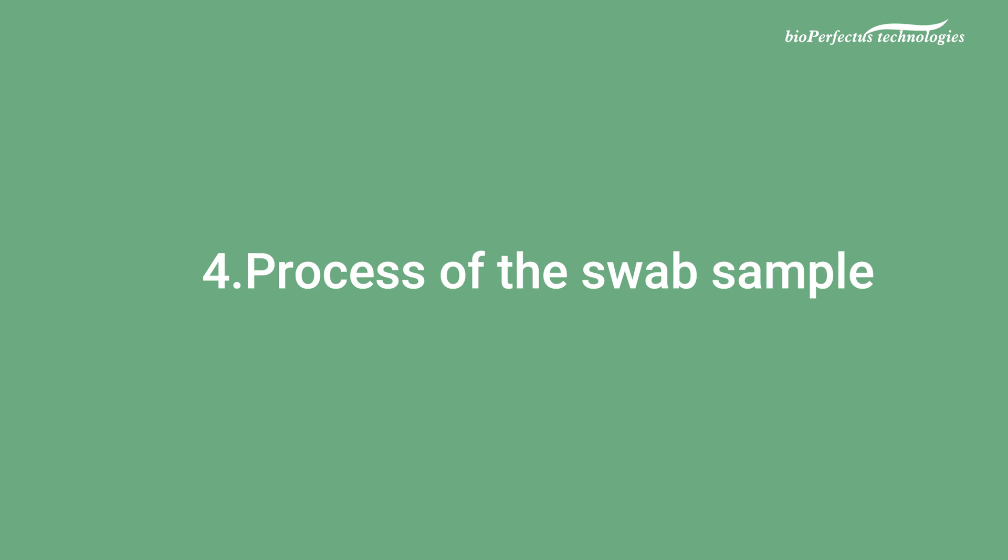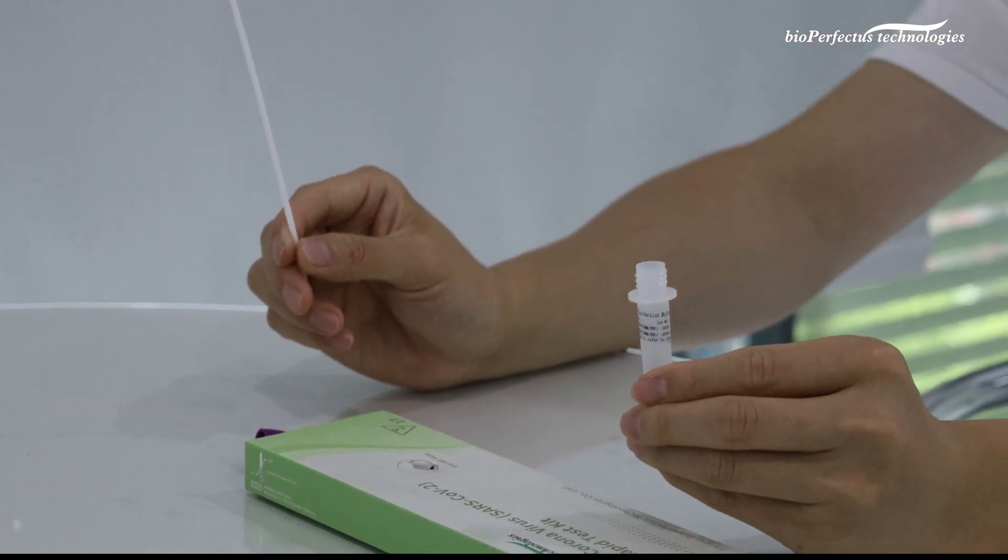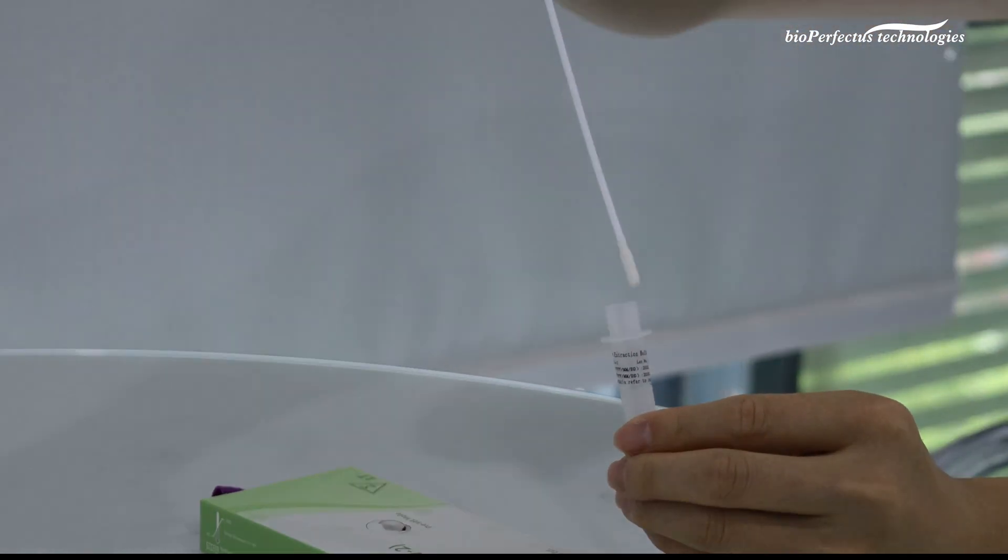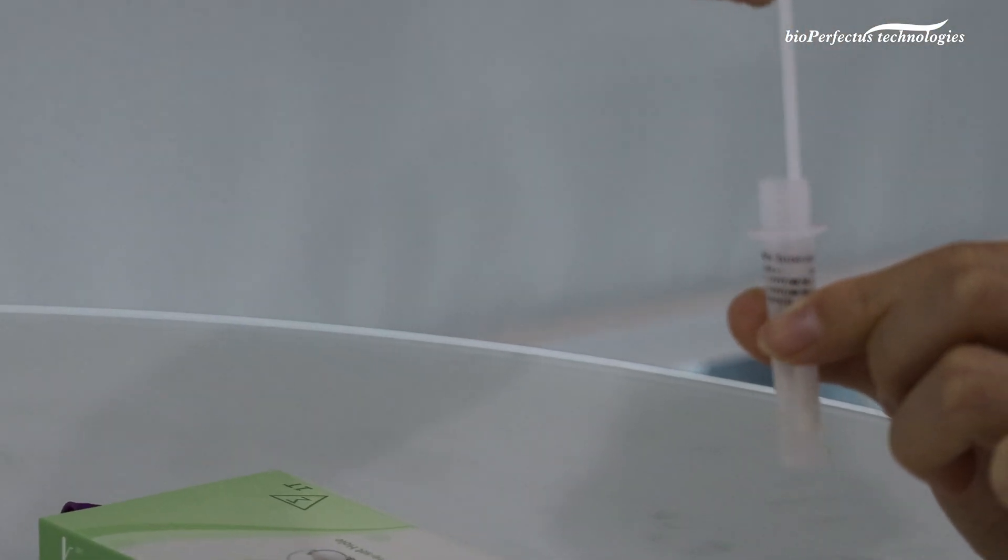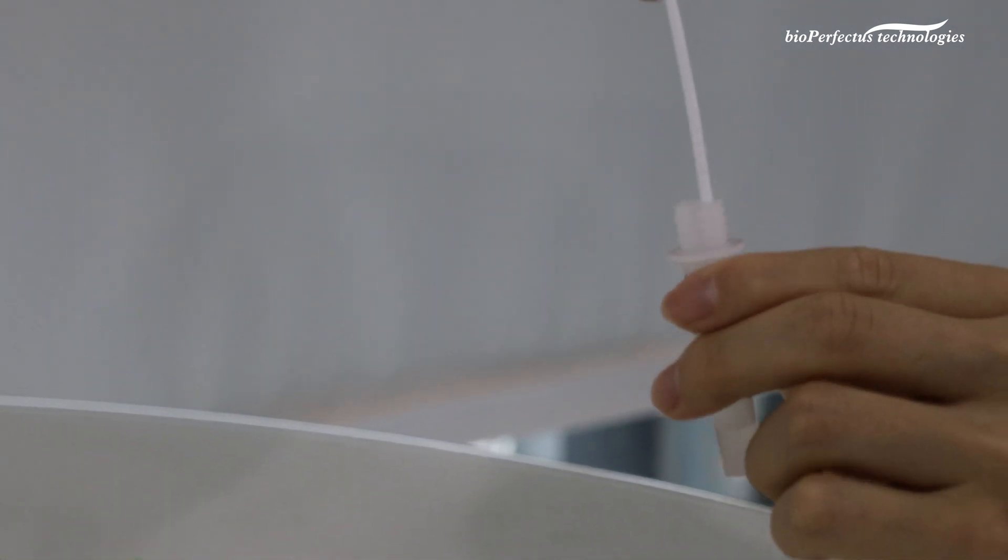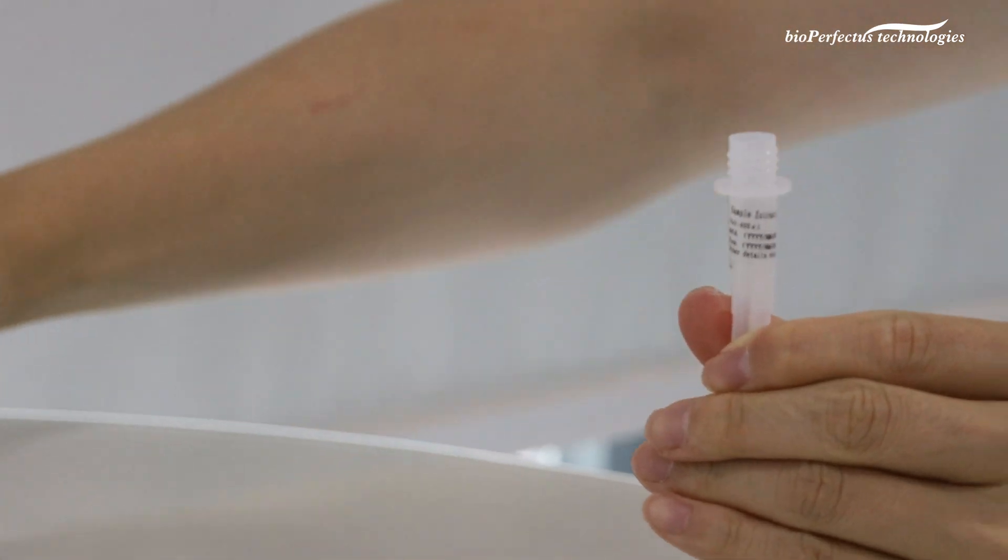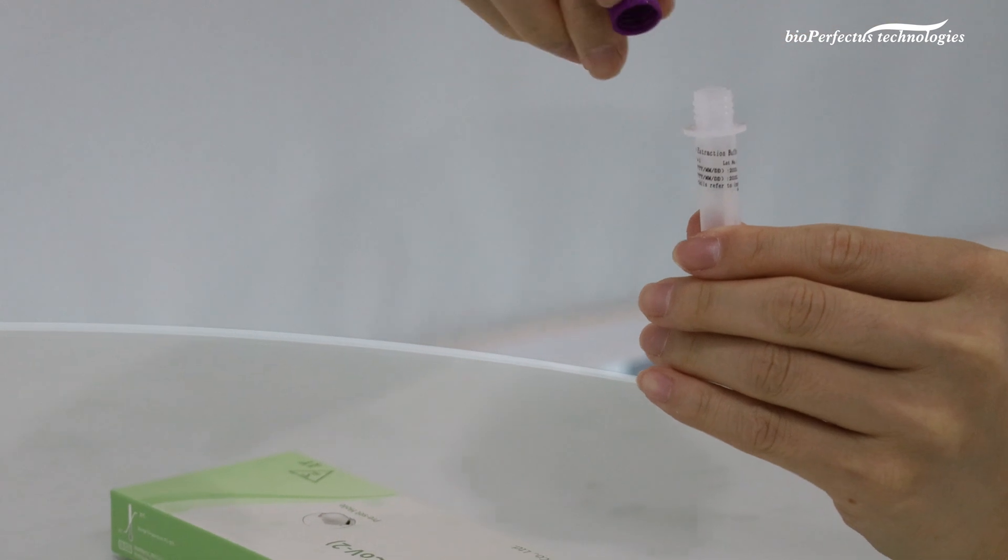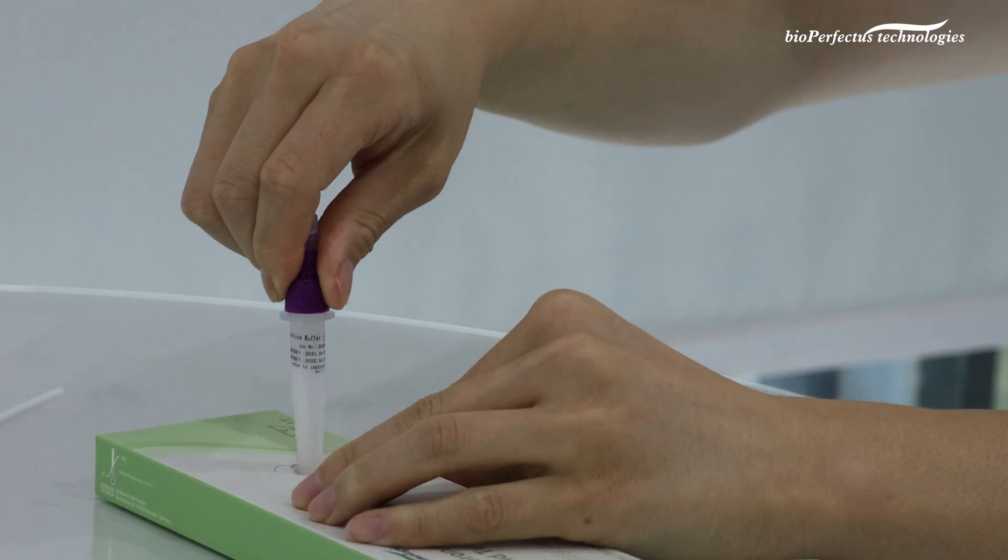Step 4: Process of the swab sample. Take the pre-packed extraction tube out from the preset hole. Place the swab into the tube. Insert the swab fabric into the tube, and squeeze the tip of the swab through the tube for 10 times while rolling it around the tube. It is important to mix thoroughly. Remember to break the swab, and leave the head of the swab in the tube to allow the fully absorption of the sample. Screw the purple cap on the tube tightly to avoid any leaks.